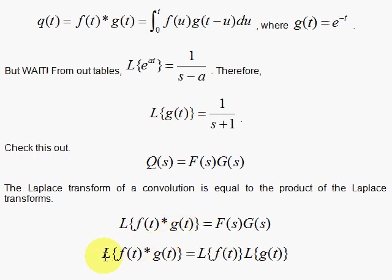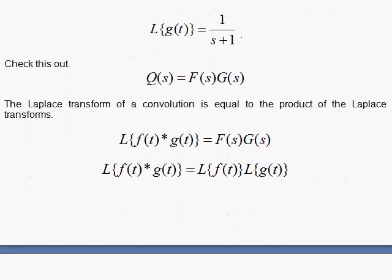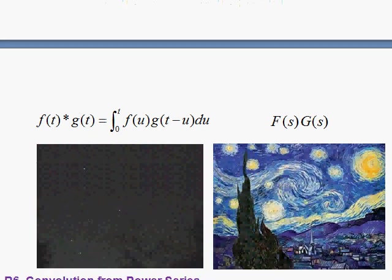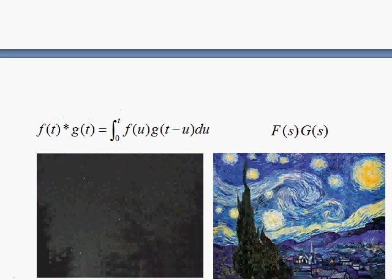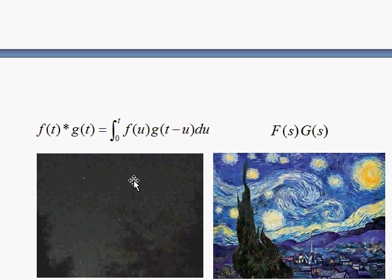That's amazing. The Laplace transform of a convolution is equal to the product of the Laplace transforms of each of those functions that you're using for the convolution. So, we have here regular space, and regular space is the convolution, and we transform to the Laplace transform space.